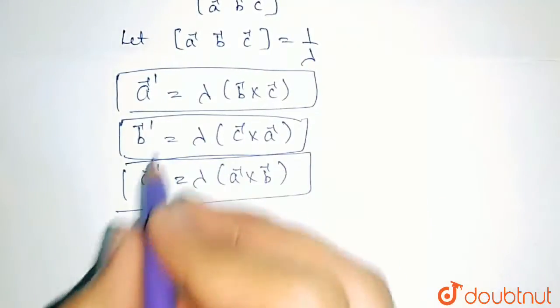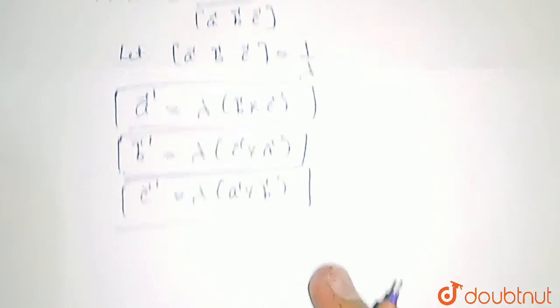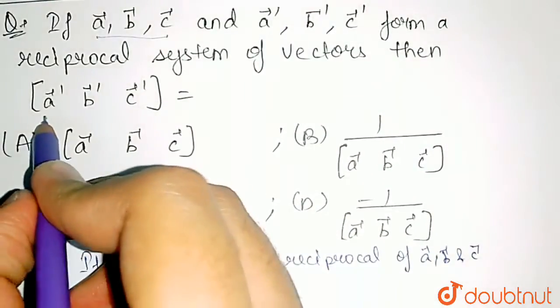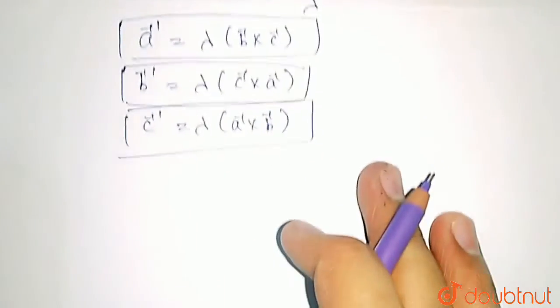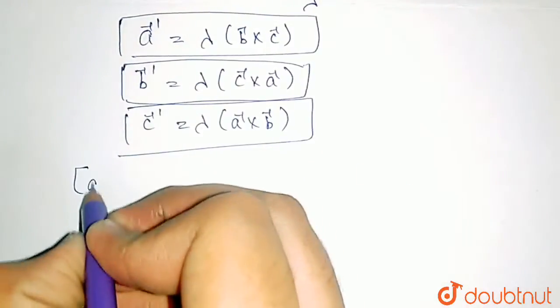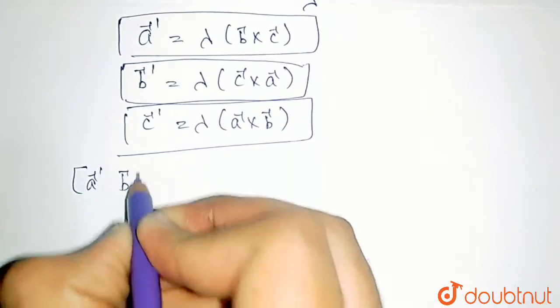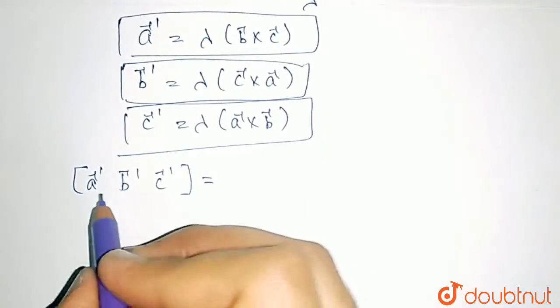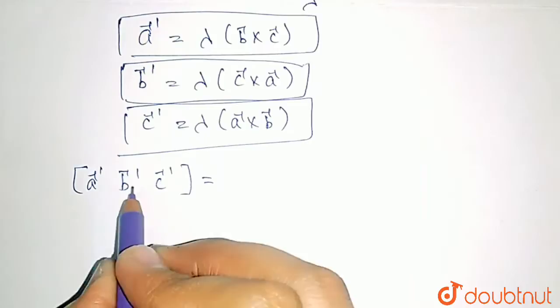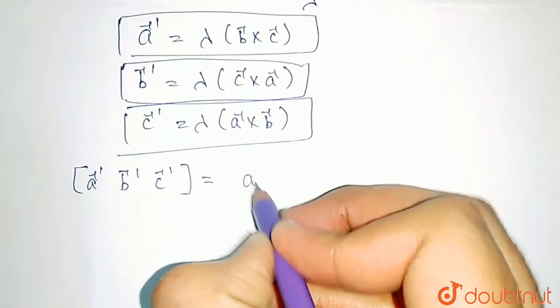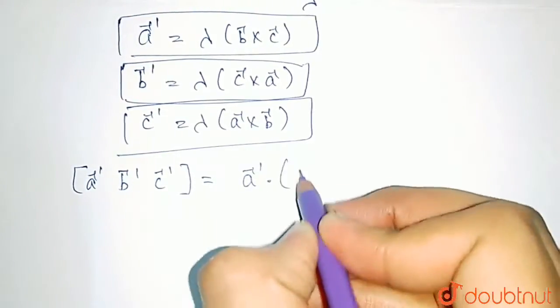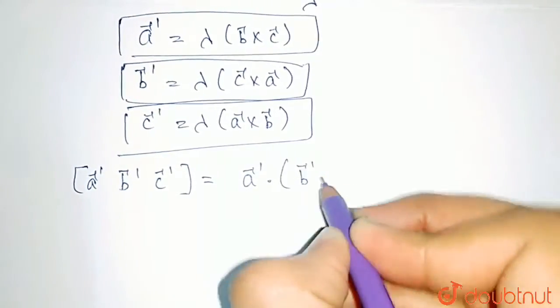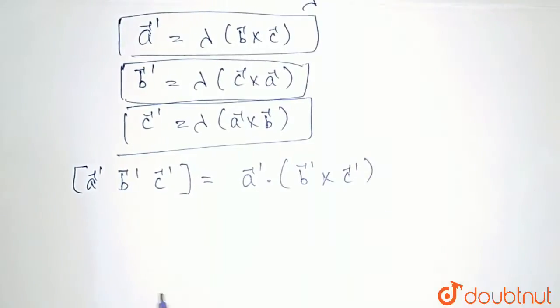Now we know A', B' and C'. Let us check what we need to find — we need to find the scalar triple product of A', B' and C'. Writing here, the scalar triple product of A', B' and C' vectors would be equal to A' vector dot (B' vector cross C' vector), since the scalar triple product of any three vectors equals that expression.